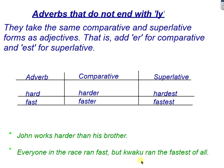You cannot say 'Kweku ran fastest than all of them' — no. The correct form is 'Kweku ran the fastest of all.' Similarly, the comparative must go with 'than,' not 'of.' For example, 'John works harder than his brother.'